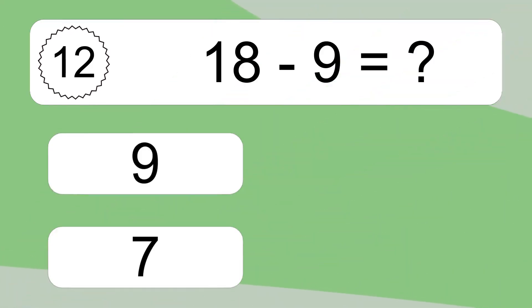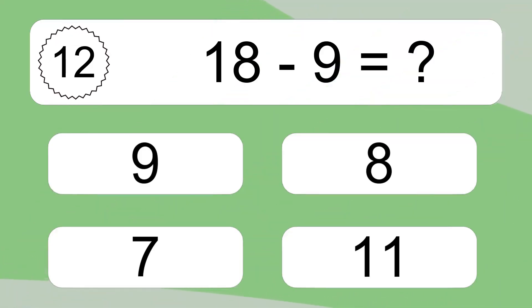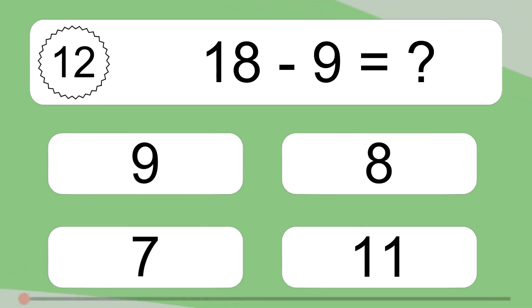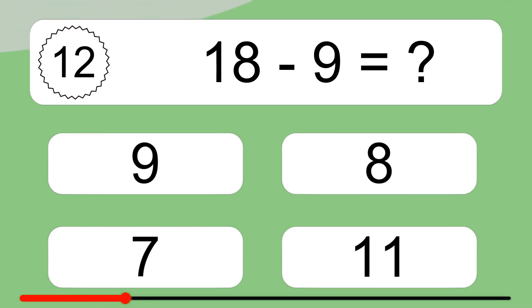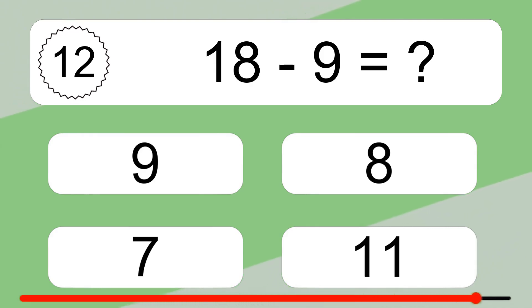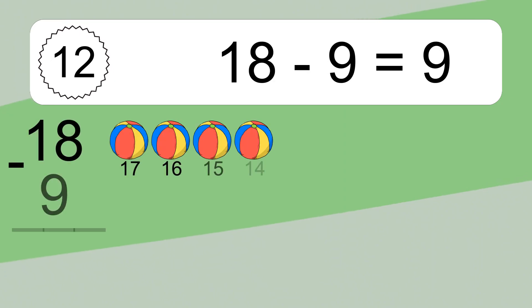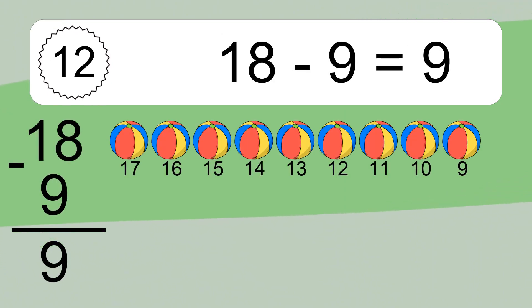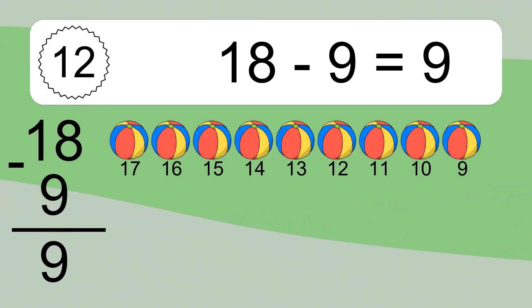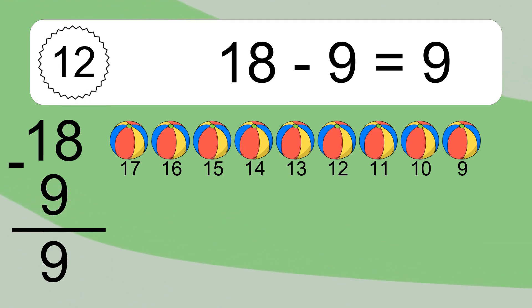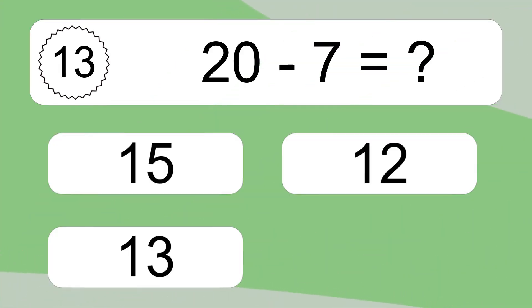18 minus 9 equals what? 18 minus 9 equals 9. Let's count it. 17, 16, 15, 14, 13, 12, 11, 10, 9.